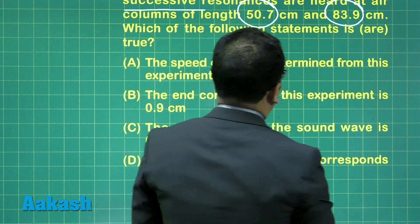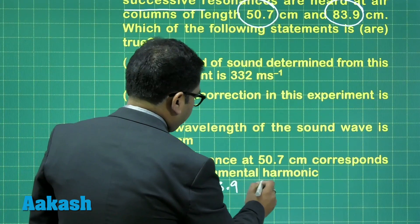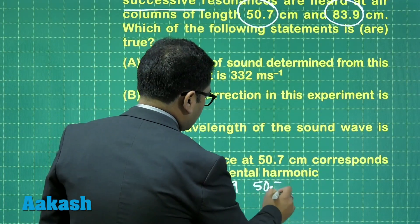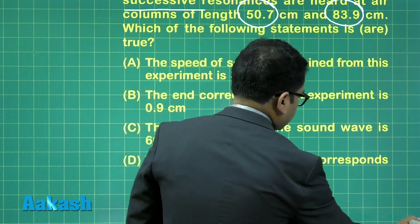One thing is sure, that 83.9 and 50.7 are two successive, so the subtraction has to be lambda by 2. That is very sure.